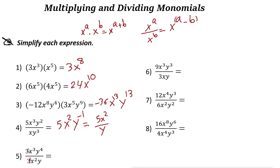The coefficients 3 and 3 cancel out. X cubed over x squared gives 3 minus 2 equals 1, so just x. Then y to the power of 4 over y gives 4 minus 1 equals 3, so y to the power of 3. The final answer is x times y to the power of 3.